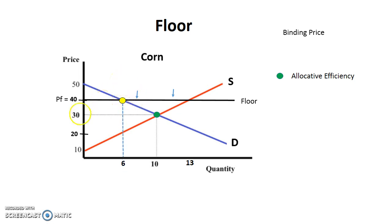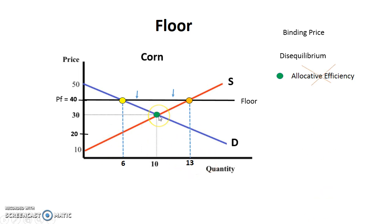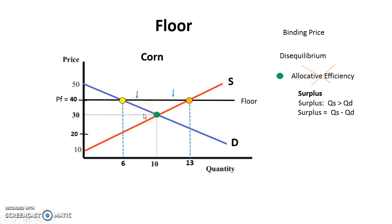At $40, drawing the line across, you see it hits the quantity demanded at 6 and the quantity supplied at 13. This creates a disequilibrium, so allocative efficiency is not achieved. With this disequilibrium it's called a surplus — a surplus exists when quantity supplied is greater than quantity demanded. We calculate the surplus by taking quantity supplied minus quantity demanded: 13 minus 6 gives a surplus of 7 units.